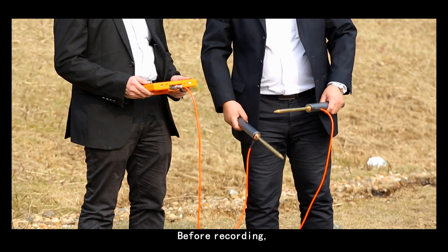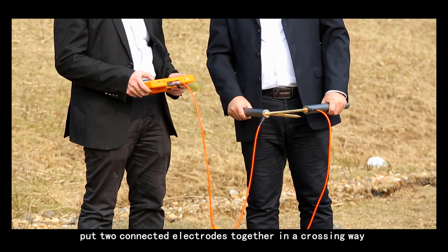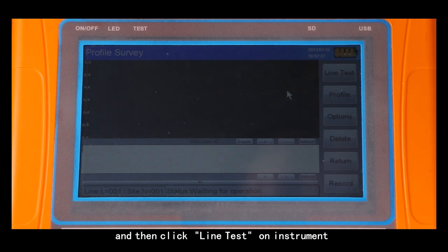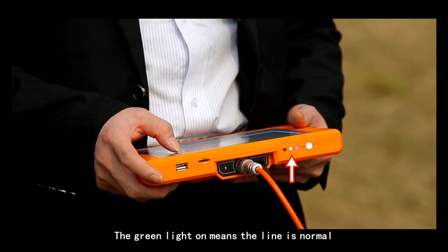Before recording, put two connected electrodes together in a crossing way and then click line test on instrument. The green light on means the line is normal.